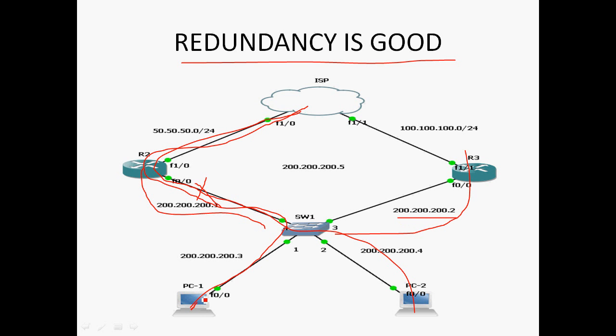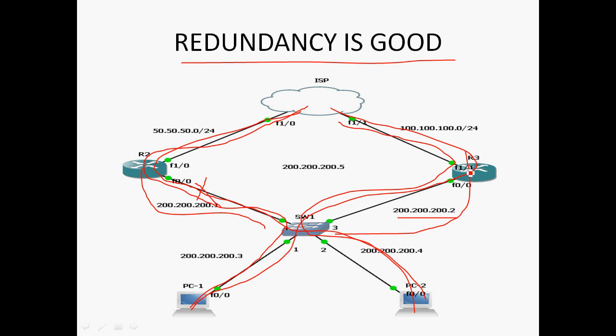Now PC1 can communicate to ISP through R3 router at 200.200.200.2, and PC2 also can communicate to ISP through R3 router. But there is a lot of manual work in changing the default gateway and resetting the devices. If you are using First Hop Redundancy Protocol, we do not need to change the default gateway manually.